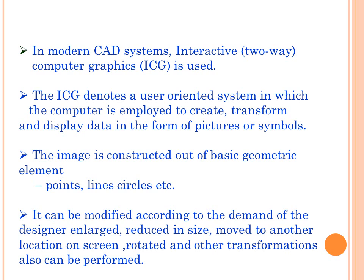Interactive Computer Graphics (ICG) is used so that the user can interact with the computer easily. The designer can create documents based on user or customer requirements. ICG is a user-oriented system in which the computer is employed to create, transform, and display data in the form of figures and symbols. The image is constructed out of basic geometric elements — points, lines, circles, etc. — and can be modified according to the demand of the designer.